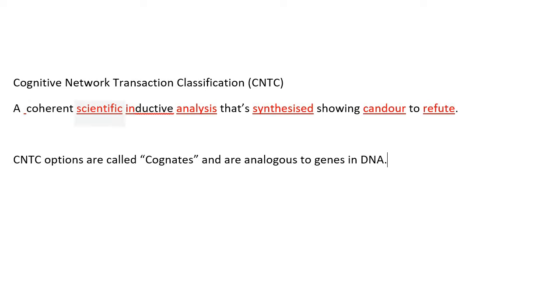So a coherent scientific - you mentioned a scientist puts together tables and references - inductive. This is a type of reasoning where you make a guess and you justify the guess. Analysis is you're trying to explain what is happening. That's synthesized. In your head, you're putting things together and you show candor. In your description, you show understanding of what's going on. And using this idea, say you come across something and you're saying, I want to refute it. So they're all different transactions, different flavors of transactions.